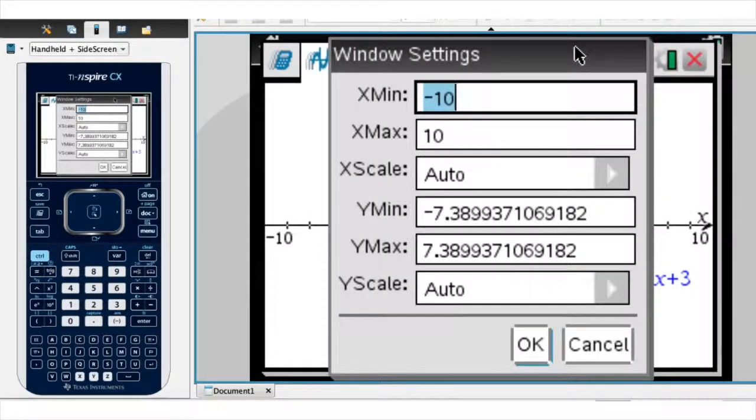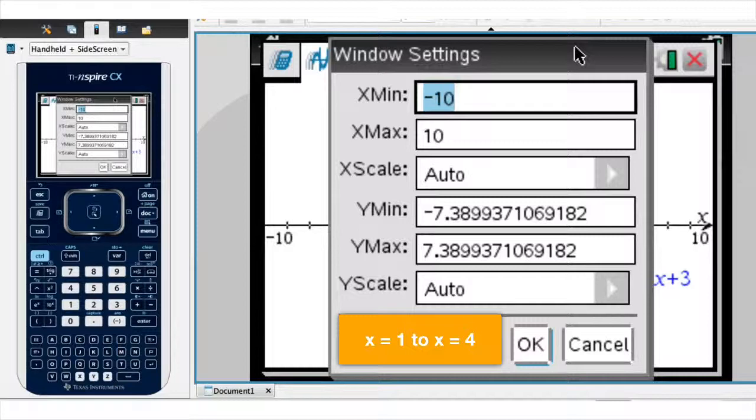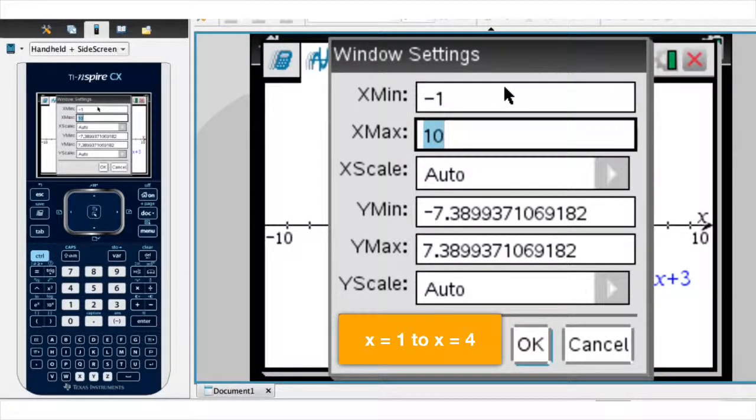Now, as a minimum x value, remember, the area we're interested in lies between x equals 1 and x equals 4. I tend to always like to make sure to go roughly two units further to the left and two units further to the right. So I'll make my x min value negative 1, and my maximum x value, I'll make 6.